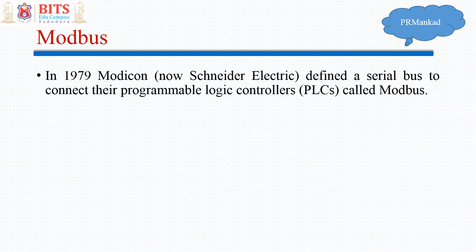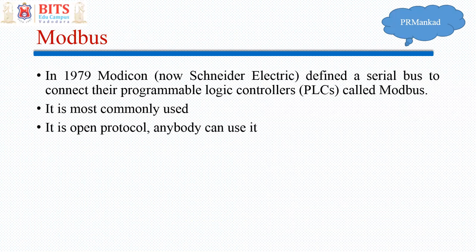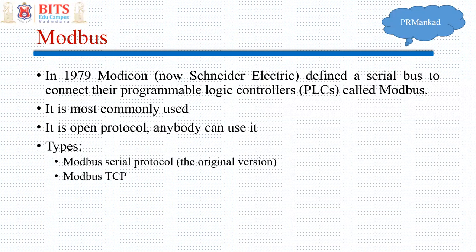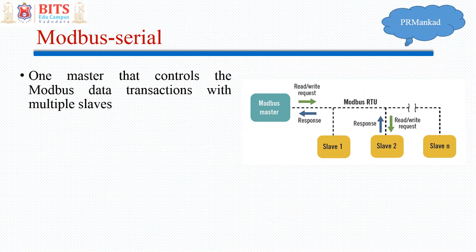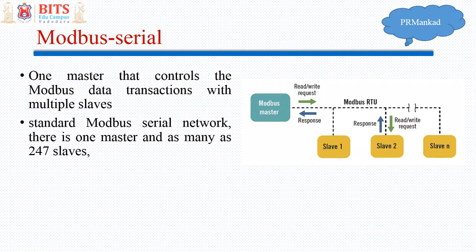Modbus was developed in 1979 by Modicon, which is now Schneider Electric, for communication between PLCs. It is the most commonly used and it is an open protocol — anybody can use it. There are two types: Modbus Serial protocol and Modbus TCP. Modbus Serial is a master-slave protocol where generally a PLC is configured as the Modbus master and sensors and actuators are Modbus slaves. One master can control as many as 247 slaves, each with a unique slave address.